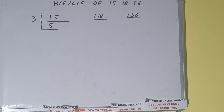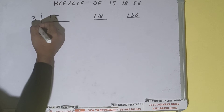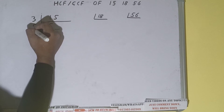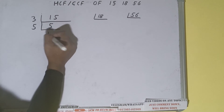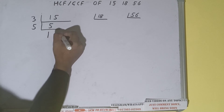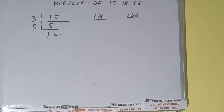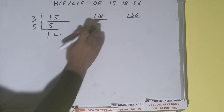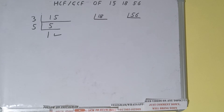Is 5 divisible by 3? No. 5 is a prime number, so it is only divisible by itself. So let's divide by 5 and we'll be getting 1. Once we get 1, we are done with this. So the prime factorization of 15 is 3 × 5.